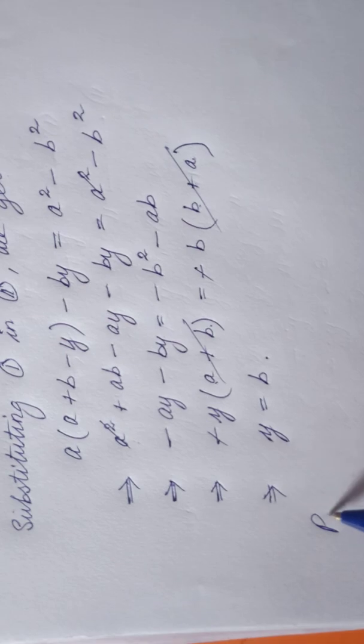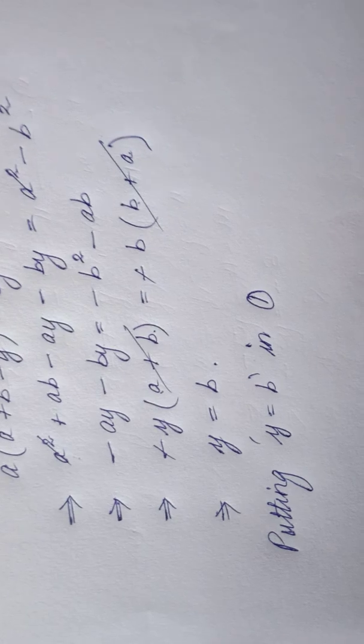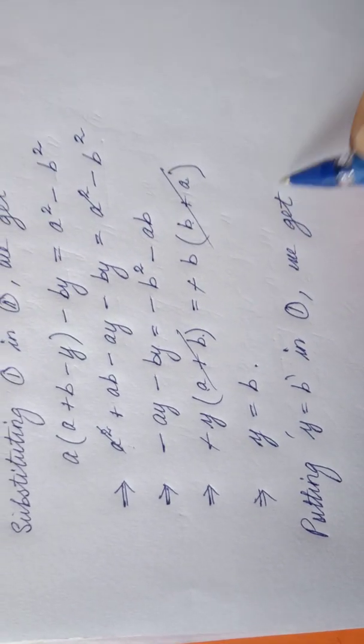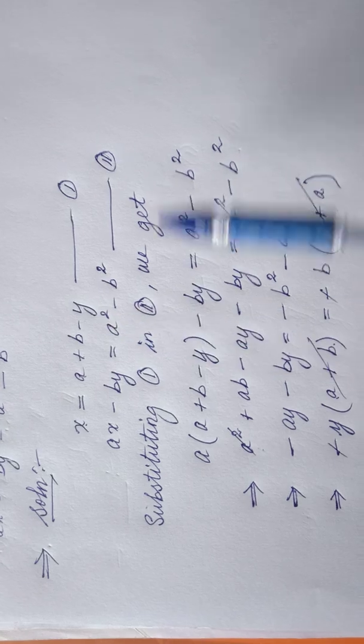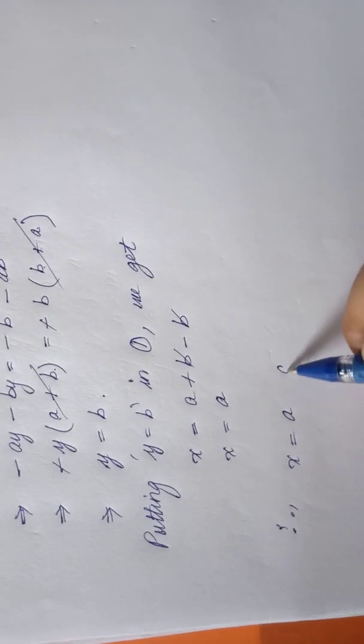Putting y equal to b in equation one: equation one is x equal to a plus b minus y. Instead of y I put b, so b and b cancel each other, giving x equal to a. Therefore x is equal to a and y is equal to b — this is the solution. It's very simple. Now we'll move on to question number four.